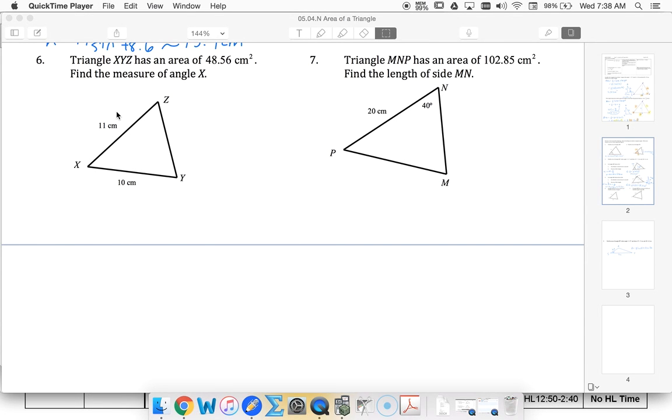Okay, these problems are slightly different because now we've been told the area. The area is 48.56 square centimeters. I know that my formula for area can be half times side times side times sine of the angle.